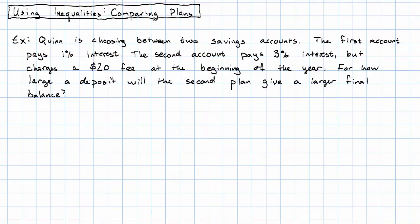Suppose Quinn is choosing between two savings accounts. The first account pays 1% interest. The second account pays 3% interest, but charges a $20 fee at the beginning of the year. For how large a deposit will the second plan give a larger final balance?